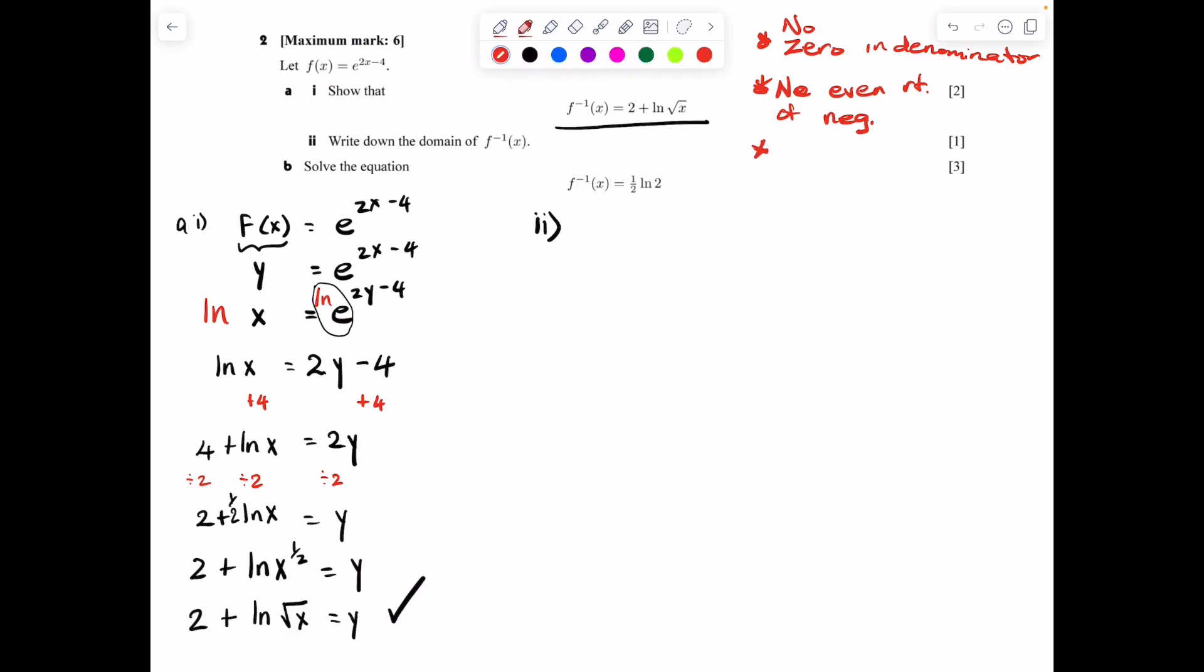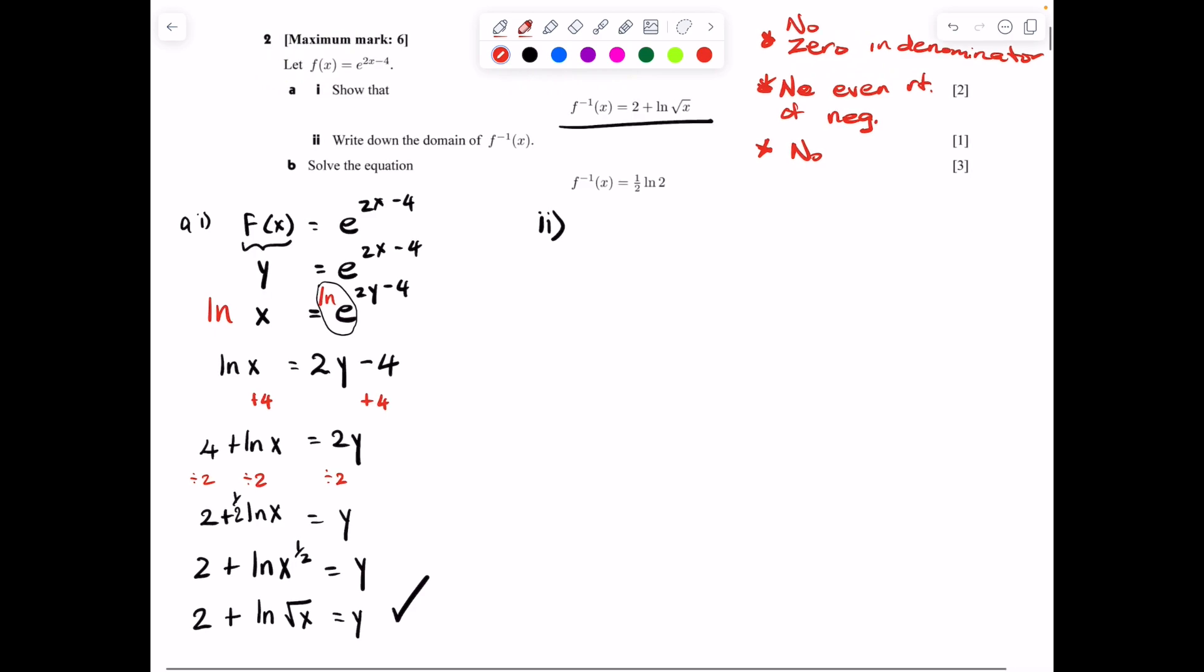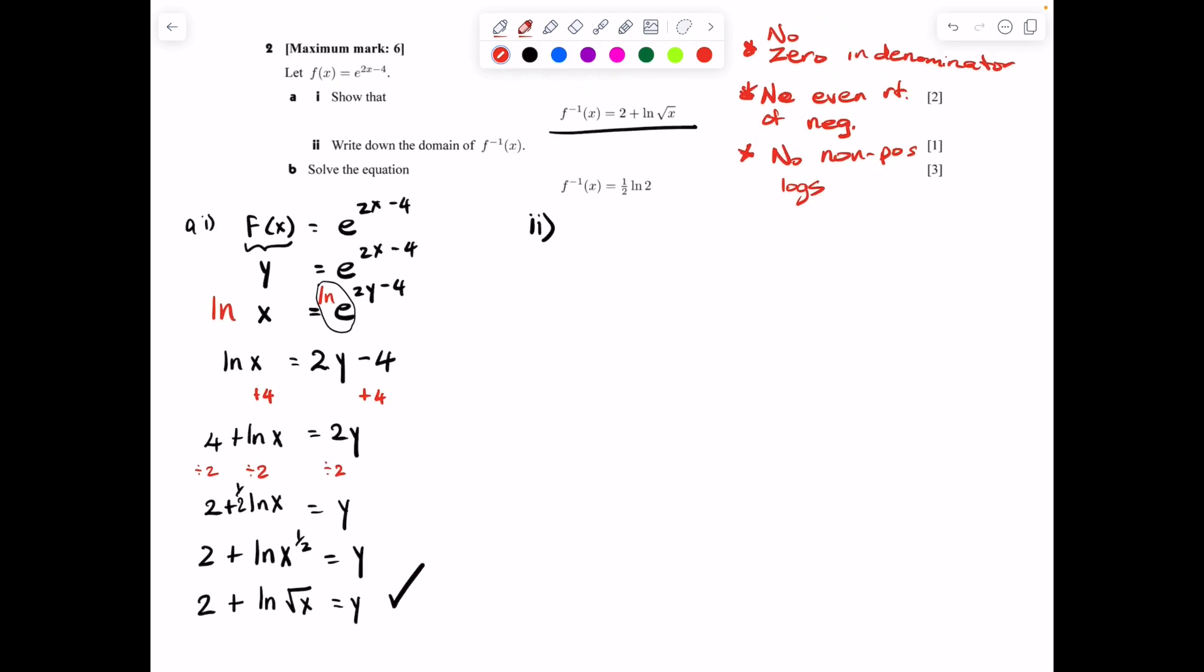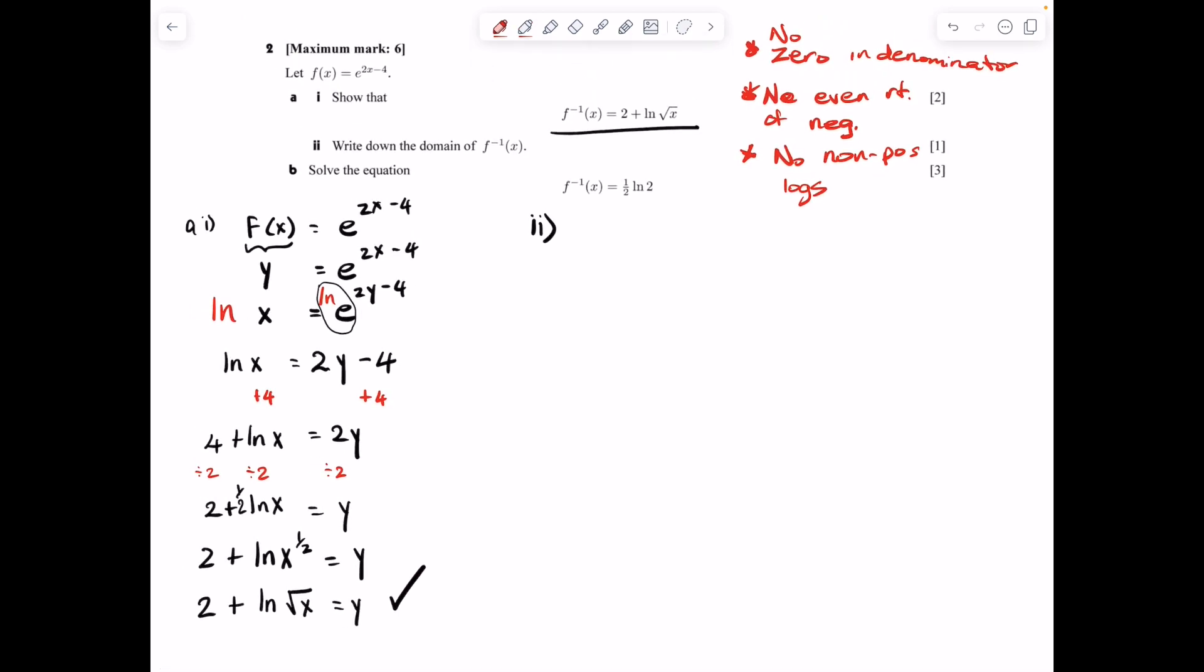And finally, the third thing that you should remember is no non-positive logs. What do I mean by that? After ln, a log, any log at all, that number should always be positive. Not even zeros allowed. So just positives in front of that ln. All right. With that in mind, right away, we should know the answer here. X has to be positive because of that third point.